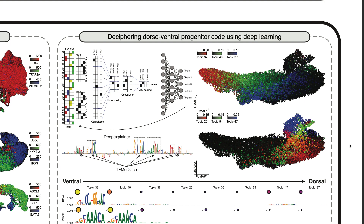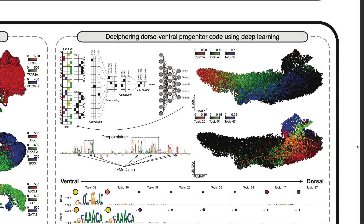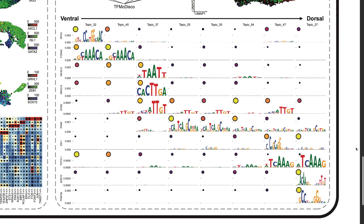To decipher the genomic code underlying dorsal-ventral patterning, we made use of deep learning. We trained a convolutional neural network to predict in which cell type a genomic region is accessible using its DNA sequence as input. Once the model is trained, we can use explainable AI techniques to extract features from the sequence that are important for a correct prediction. These features often correspond to transcription factor binding sites. Applying this model to neuronal progenitors, we extracted transcription factor binding sites important for different dorso-ventral states. The importance of these binding sites correlates with the expression of the transcription factors binding them, represented by dot sizes and colors. From ventral to dorsal we find binding sites for RFX4, FOXA2, NKX2.2, PAX6, ZIC1, TCF7L1, SOX10, and TFAP2A.